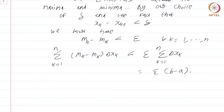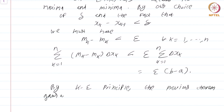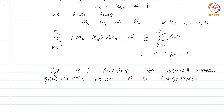So what we have shown is: given any epsilon, we can find a partition P_epsilon such that U(f, P_epsilon) minus L(f, P_epsilon) is less than epsilon times (b - a). By the epsilon principle, the previous theorem guarantees that f is integrable. This completes the proof. The proof was an application of several properties of continuous functions — please go through it carefully to see where each property was applied. To even begin the proof we used the fact that continuous functions on compact sets are bounded, and we have defined integrals only for bounded functions.